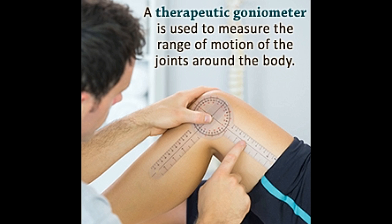He derived the goniometer from the astrolabe — a device that measures the tilts, elevations, or depressions of an object — which was used by astrologers, astronomers, and navigators. Today, the goniometer has undergone many modifications and finds application in a variety of fields. Let's take a brief look at the different types of goniometers.